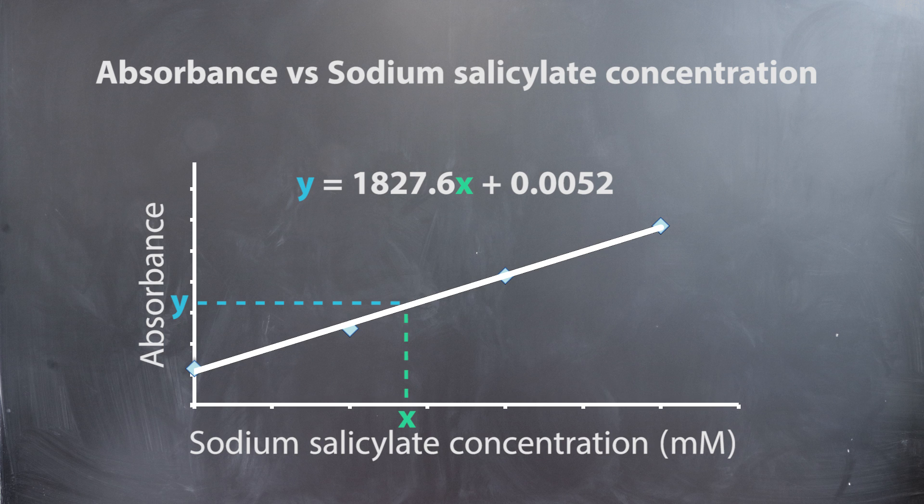For example, in this graph if the absorbance of the unknown was 0.3, then you could use the formula for the standard curve which is shown here. Plug in 0.3 for Y and obtain a concentration of 1.613 times 10 to the power of negative 4 millimolar. Be sure to have a detailed graph, legend, and axis titles with units.